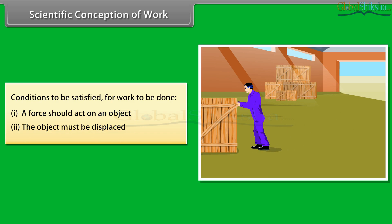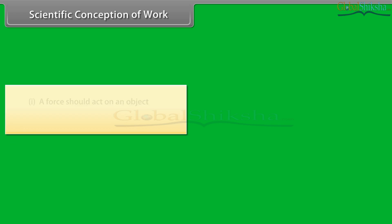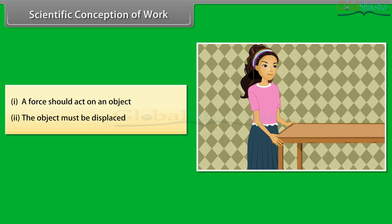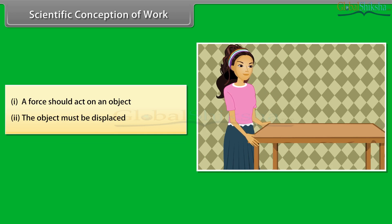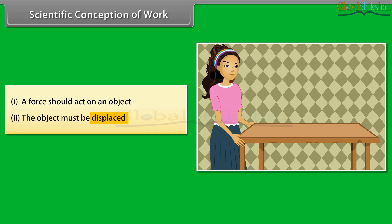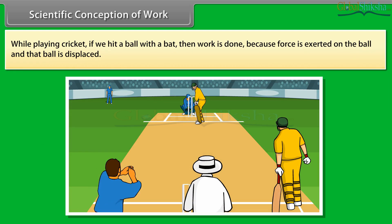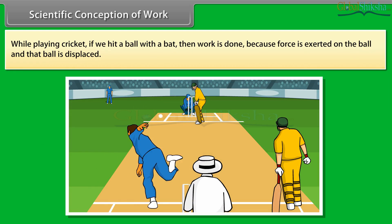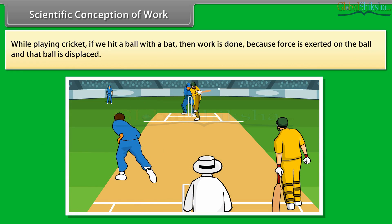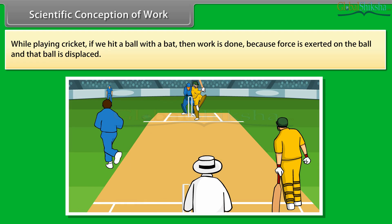Let's take a look at a few situations. If we pull a table and the table moves through a distance, we have exerted a force on the table and it is displaced, so both conditions are satisfied — therefore, work is done. Similarly, while playing cricket, if we hit a ball with a bat, work is done because force is exerted on the ball and the ball is displaced.